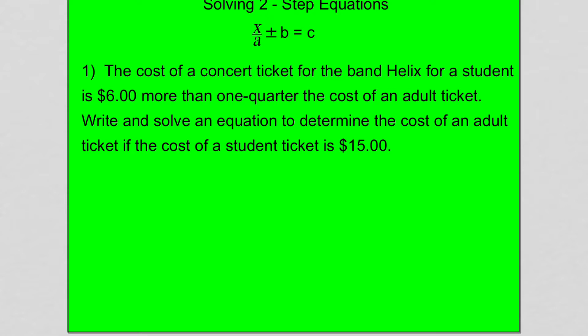In this problem, it says the cost of a concert ticket for the band Helix for a student is $6 more than one quarter of the cost of an adult ticket. Write and solve an equation to determine the cost of an adult ticket if the cost of a student ticket is $15. So what you've got to do is narrow it down and have a process. The first thing you want to do is determine your unknown — look at the end of the problem in the question, and that'll be your unknown. It says write and solve an equation to determine the cost of an adult ticket. That's our unknown. Let X equal the adult ticket.